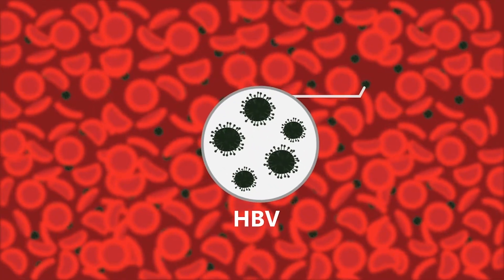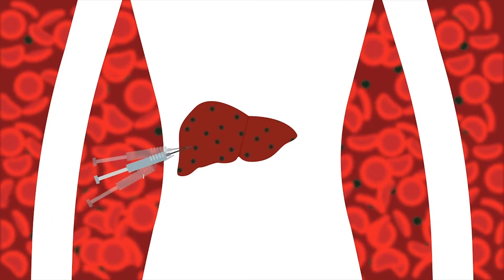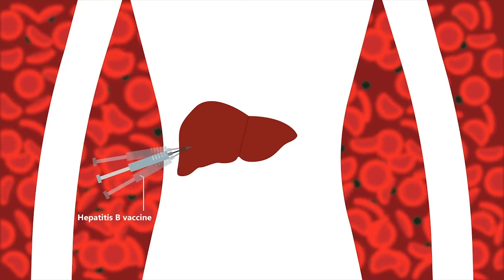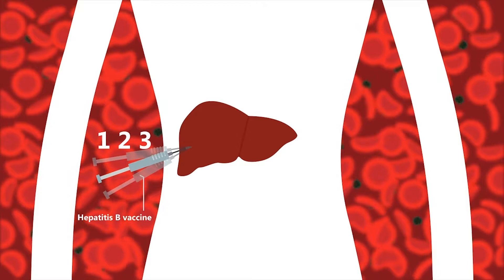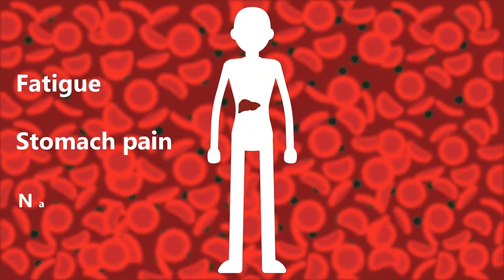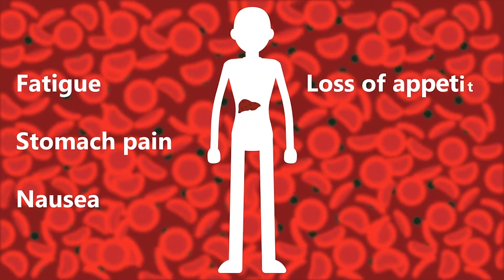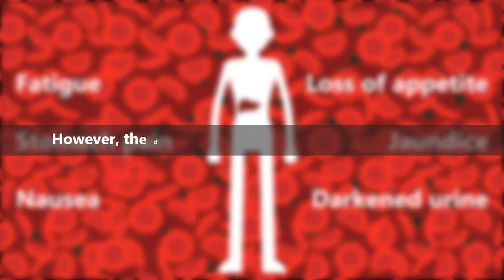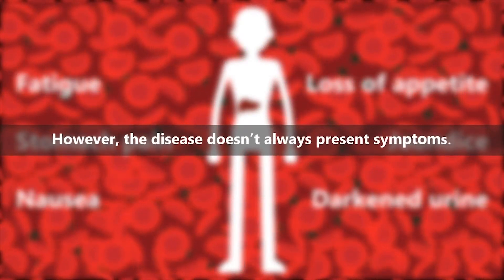Hepatitis B is a disease that attacks the liver. The disease can be prevented by a hepatitis B vaccine composed of three separate shots. Symptoms include fatigue, stomach pain, nausea, loss of appetite, jaundice, and darkened urine. However, the disease doesn't always present these symptoms.